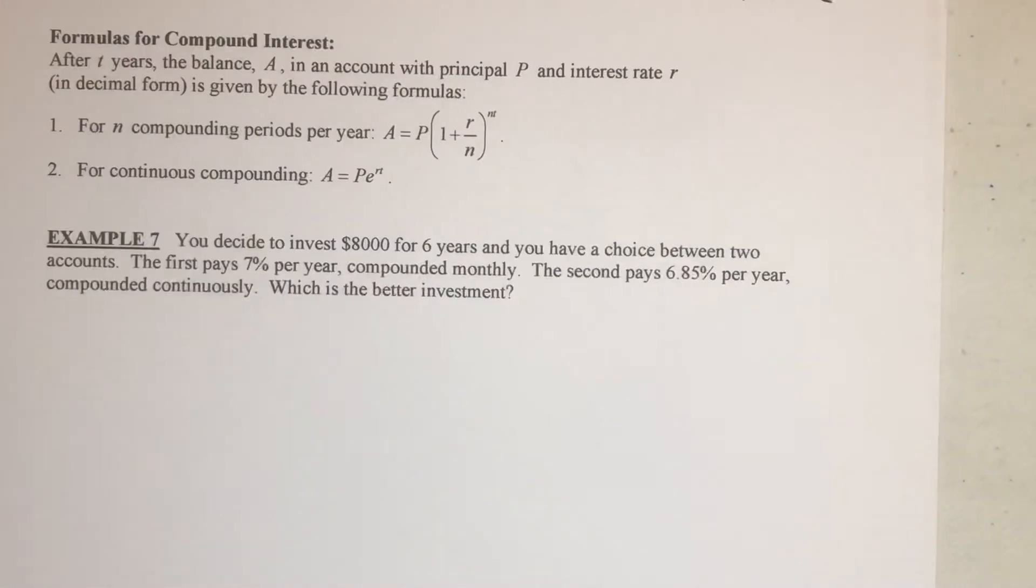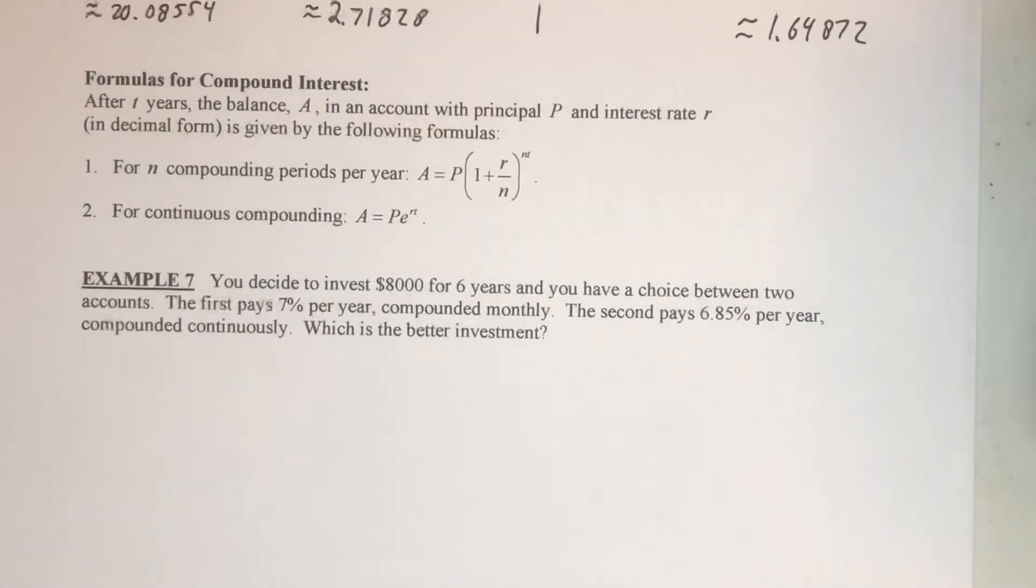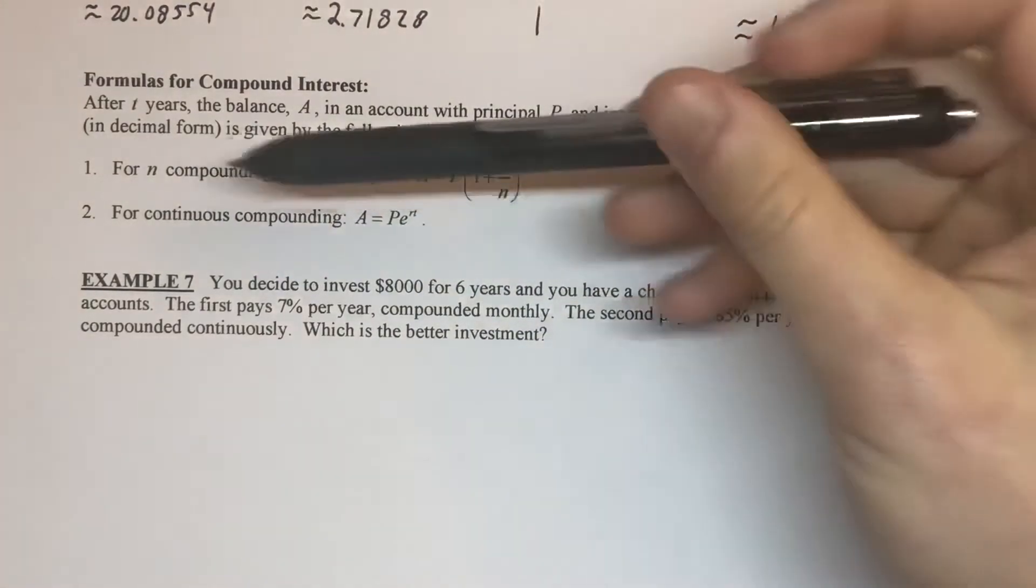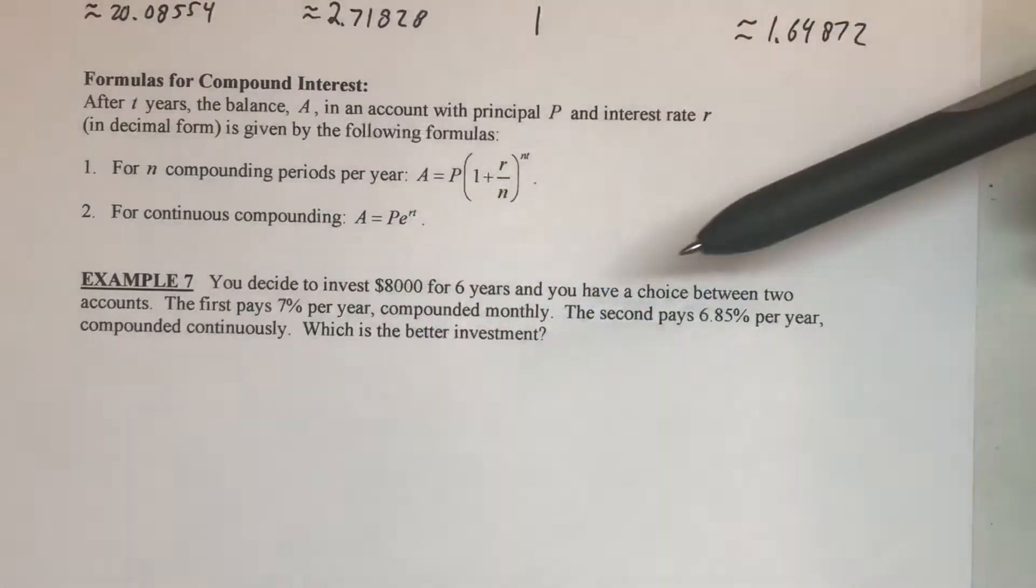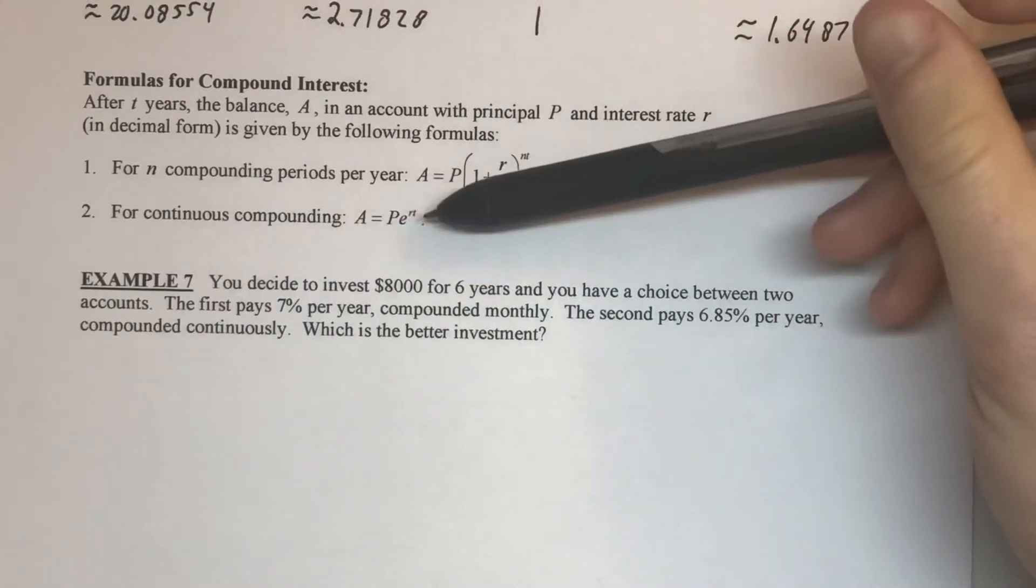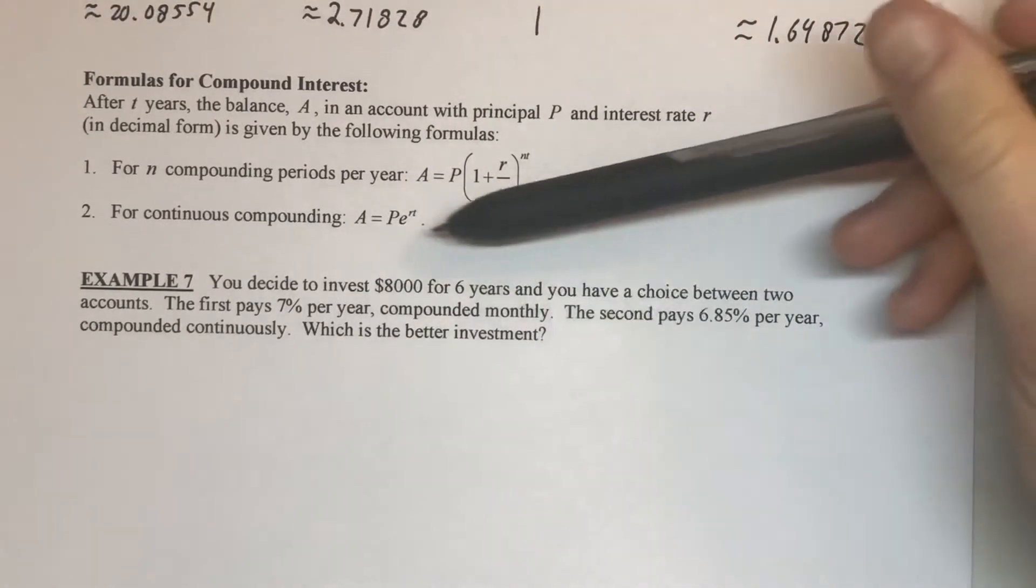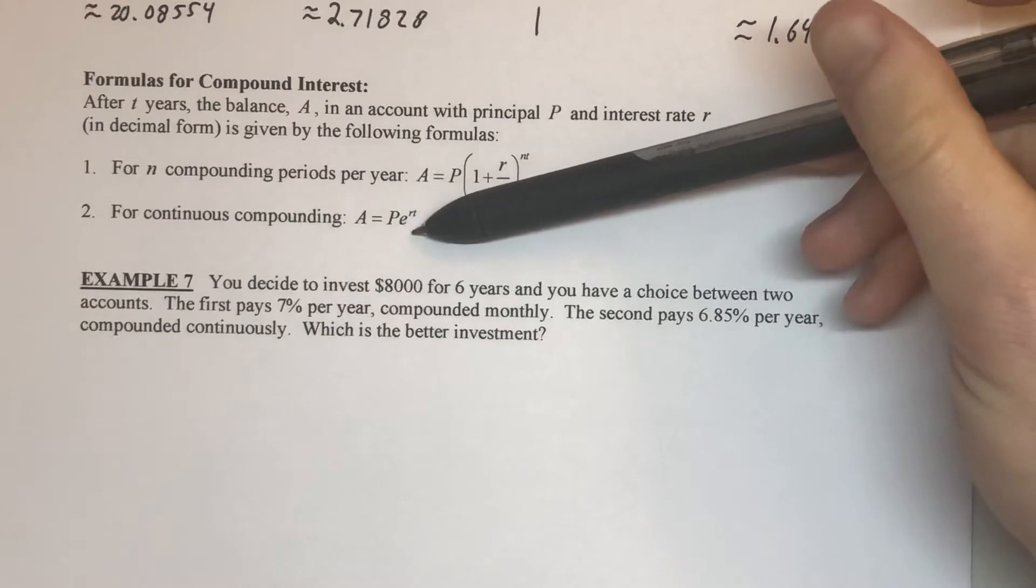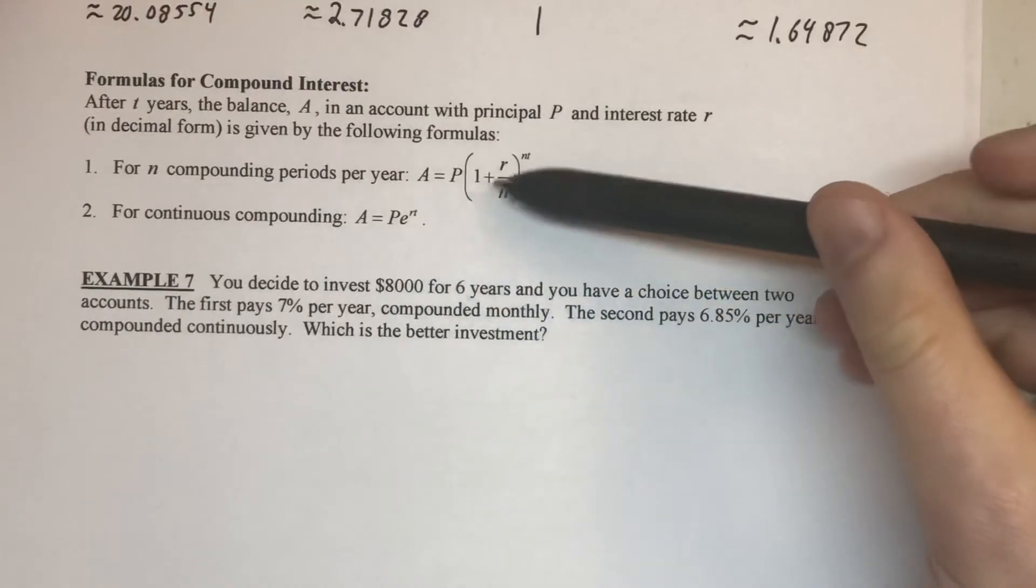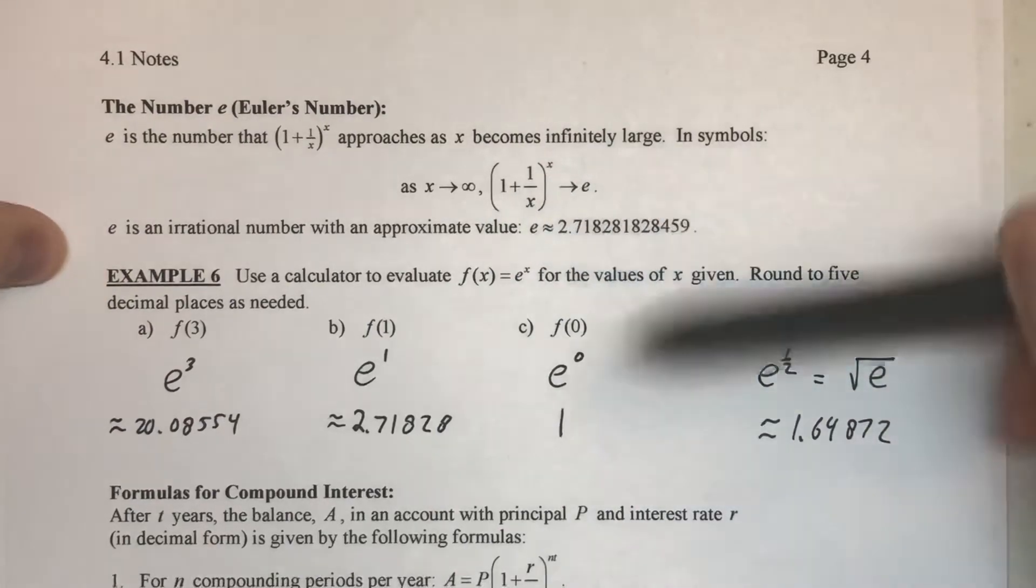All right, so, one quick application of some exponents. We'd be looking at interest being compounded. There's two formulas here, one being a compounding that happens a certain number of times per year, so n compounds per year. The other one we call continuous compounding. It's more often than every second, right? It's an infinite compounding of the value. And so, notice we actually end up using e for that value, and this right here is actually what relates to where e comes from. This one plus one over x to the x.